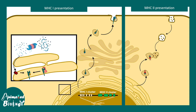Generally, the antigen-binding site on the class 2 MHC is blocked by a specific molecule. When an exogenous antigen is added, that block is removed and the antigen is loaded onto the peptide loading groove of the class 2 MHC. Eventually, the class 2 MHC-bound vesicles are transported and displayed on the cell surface.